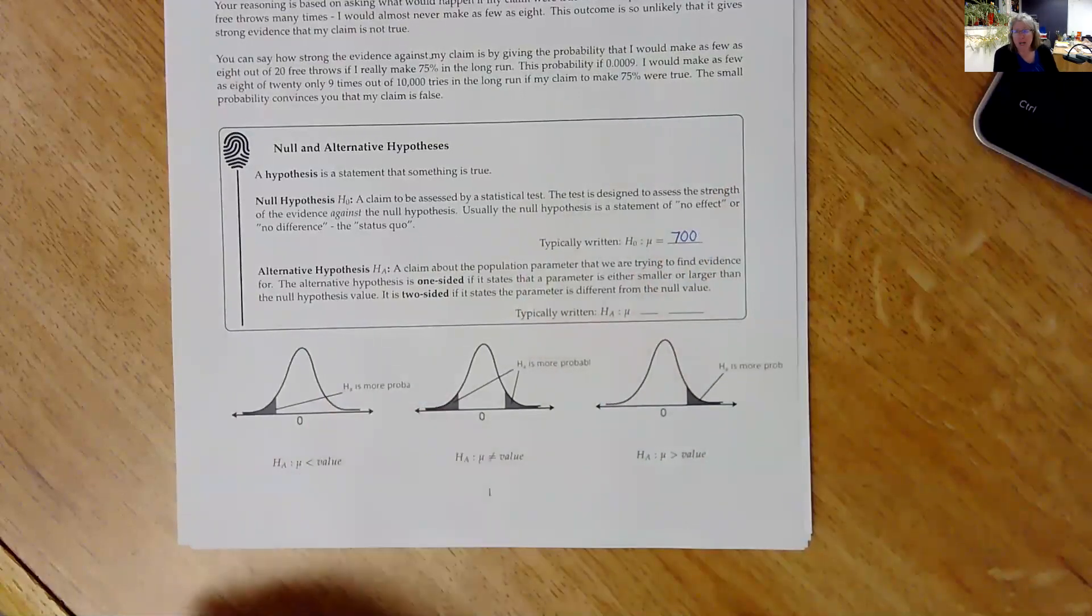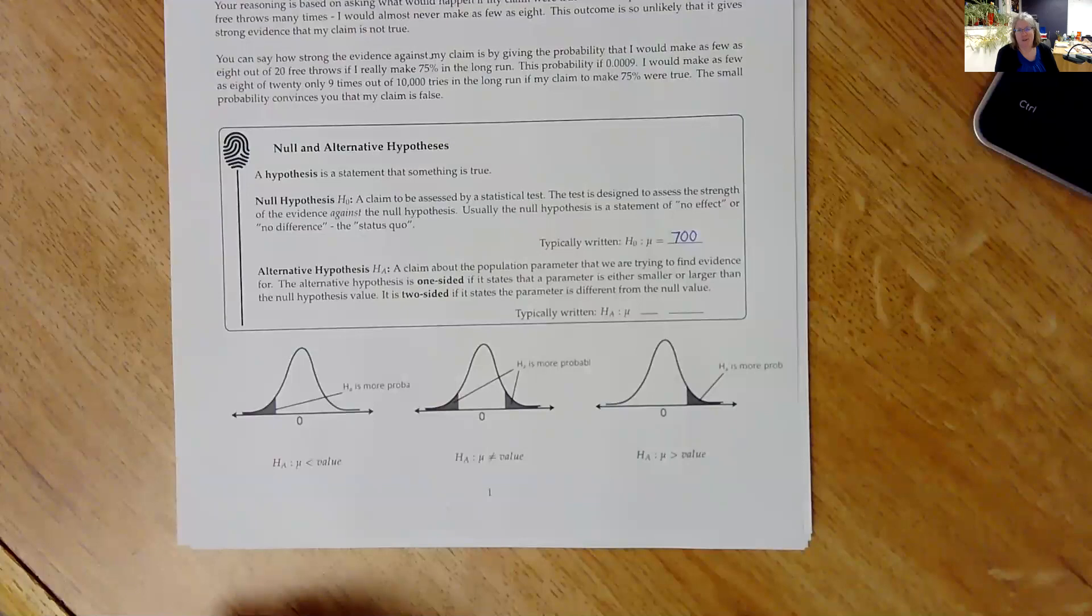And what we're doing in a hypothesis test is we're looking for evidence against the null. So if you think about the null hypothesis being, I don't know, the government, the big evil corporations or something like that, we're looking for evidence against that. To borrow some sort of political science colloquialism here.